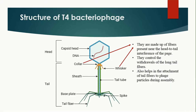Next are the collar and whisker, which are fibers present near the head-tail interface. They connect the head region and the tail region together, help in the withdrawal of long tail fibers, and also assist in the attachment of tail fibers to the phage during assembly — since the head and tail are formed separately inside the bacteria and then joined together.